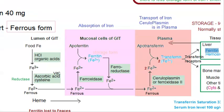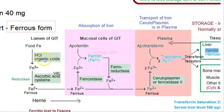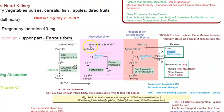It is also helpful for absorption of iron. Ascorbic acid, along with HCl which is in your stomach and cysteine, will help in the absorption of iron from the lumen of the GIT — specifically keeping iron in its ferrous form.